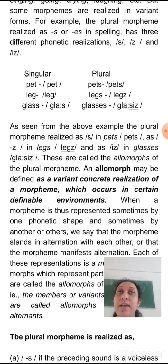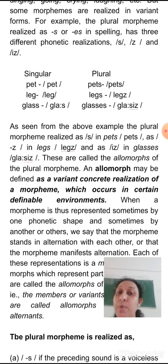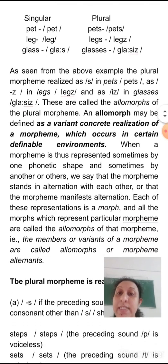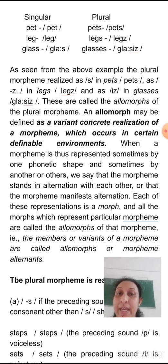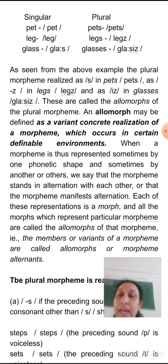These are called the allomorphs of the plural morpheme. An allomorph may be defined as a variant concrete realization of a morpheme which occurs in certain definable environments. When a morpheme is represented sometimes by one phonetic shape and sometimes by another, we say this morpheme stands in alternation. Each of these representations is a morph, and all the morphs which represent a particular morpheme are called allomorphs of that morpheme.